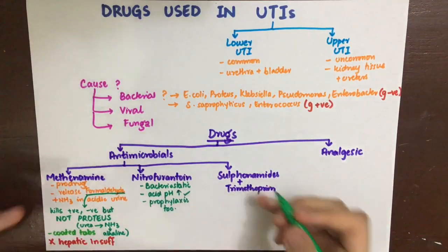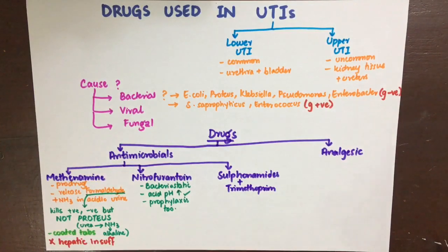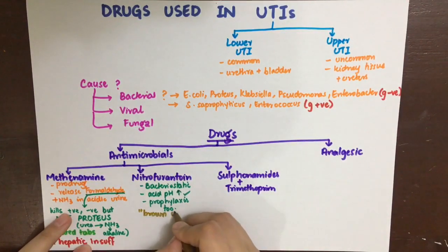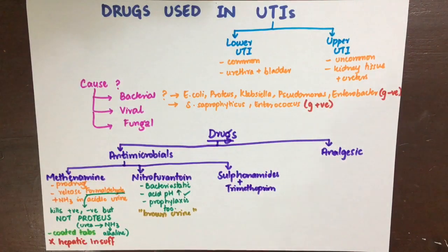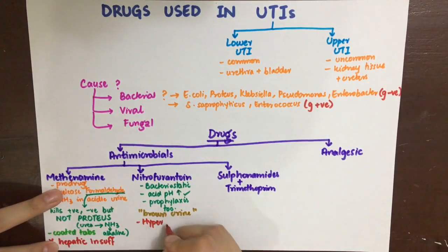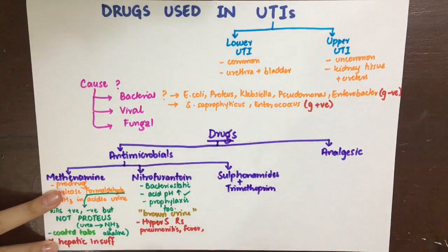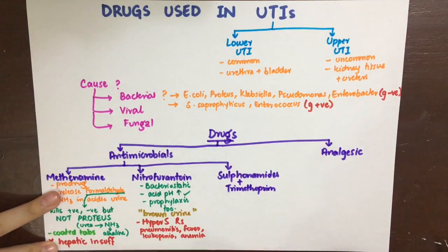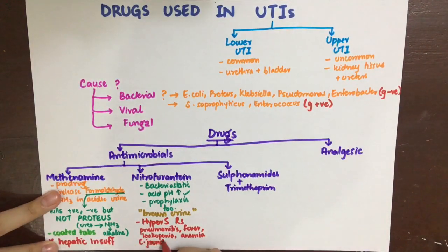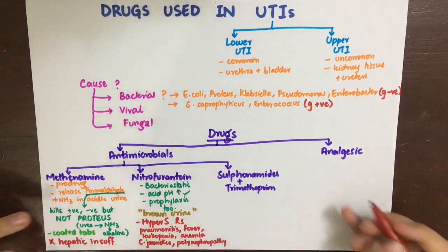The second drug is nitrofurantoin. It is a bacteriostatic drug that works best in acidic pH and can be used in prophylaxis as well. It will make the urine brown, which can alarm the patient, but the patient should be counseled that it is harmless. It can be associated with hypersensitivity reactions manifesting as fever, leukopenia, anemia, cholestatic jaundice, acute pneumonitis, and rarely polyneuropathy — note that is neuropathy, not nephropathy.